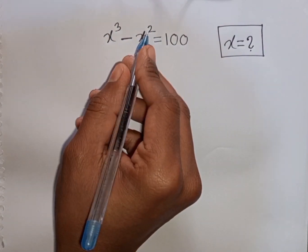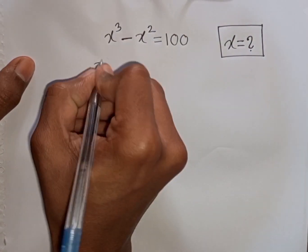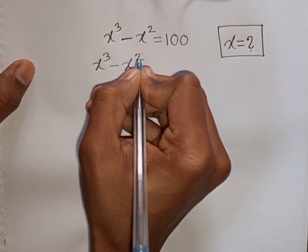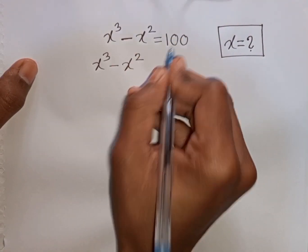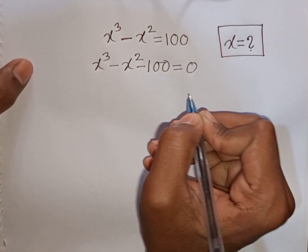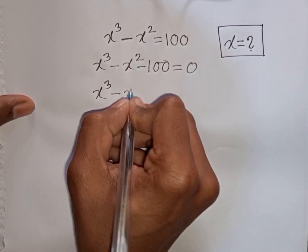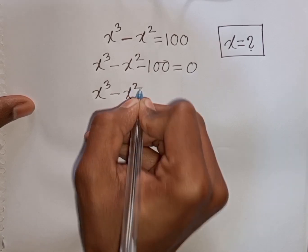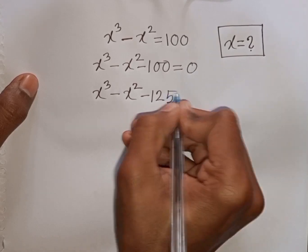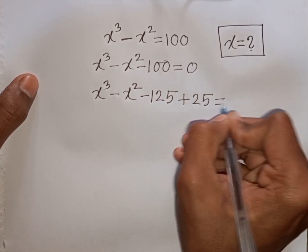We have x³ - x² = 100. Find the value of x. We take 100 to the left side, so it becomes x³ - x² - 100 = 0. Now, minus 100 can be written as minus 125 plus 25, giving us x³ - x² - 125 + 25 = 0.